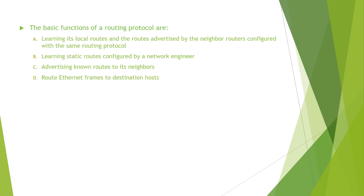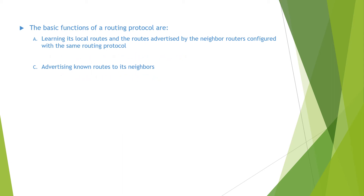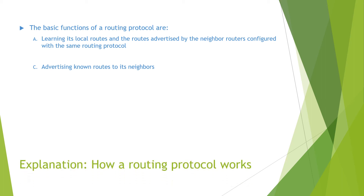The question reads: what are the basic functions of a routing protocol? Options are: learning its local routes and the routes advertised by neighbor routers configured with the same routing protocol; learning static routes configured by a network engineer; advertising known routes to its neighbors; routing Ethernet frames to destination hosts. We know the basic functions of a routing protocol are learning local routes and routes advertised by neighbors, and advertising known routes to neighbors. So the answers are A and C. You can find the detailed explanation in the video.